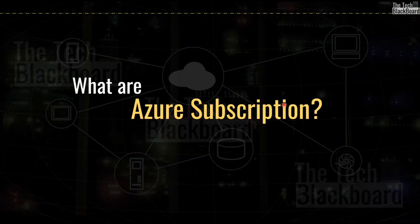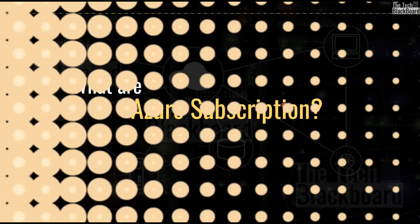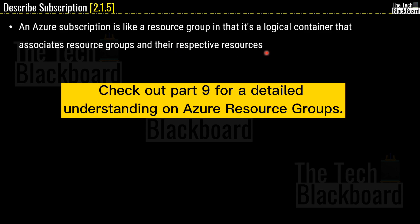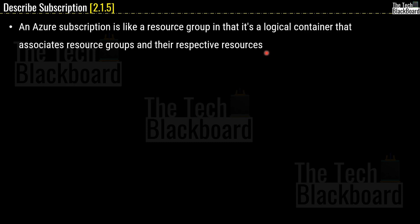Let's first understand Azure subscription — this is section 2.1.5. You can visualize an Azure subscription like a resource group in the sense that it's a logical container that associates the resource group and their respective resources. If you want to understand more on resource group, please check out the previous part 9 of this fundamentals series. The similarity between Azure subscription and the resource group ends there. The real importance of Azure subscription comes from the fact that billing is linked to the Azure subscription — Azure generates billing or invoices of all your Azure resources at the subscription level. You can have multiple subscriptions in one Azure account, each with its own billing.